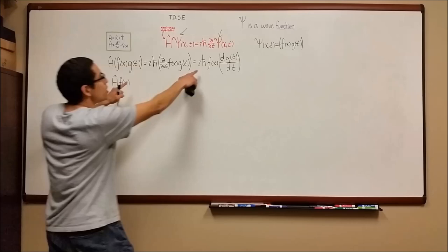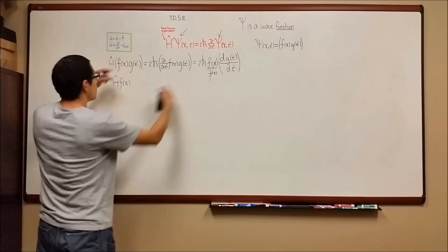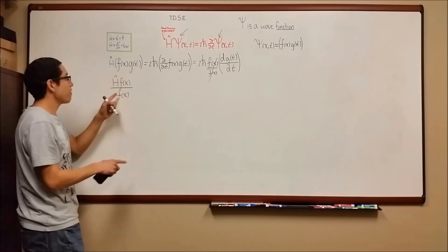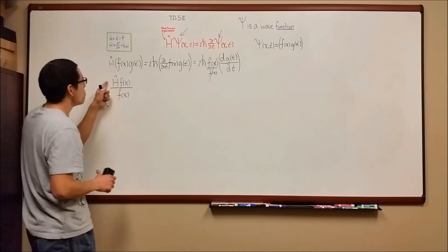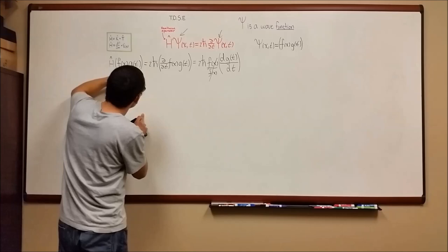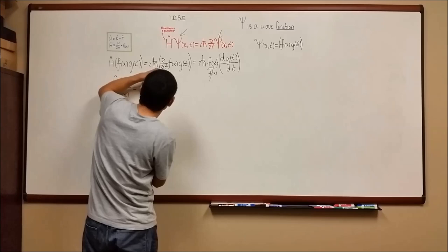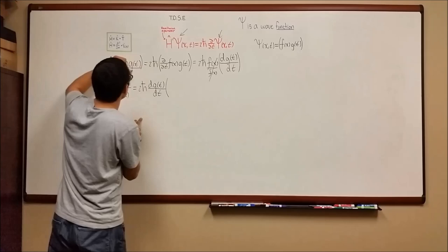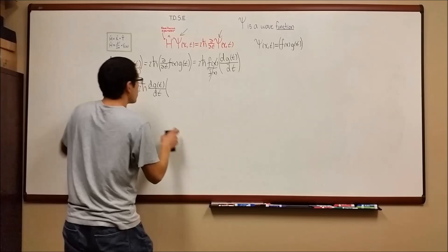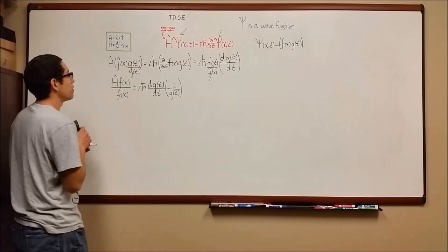Since what we're going to do is divide out f of x — when we divide f of x on the right side it cancels, but when we divide it under the term where H-hat has acted on f of x, they don't cancel because H-hat has made it something different. We represent that together on the left-hand side. On the right, this is going to be i h-bar times the derivative of g of t, and dividing out g of t gives us one over g of t.